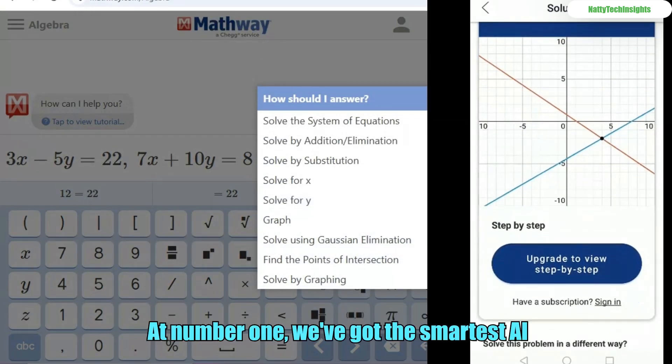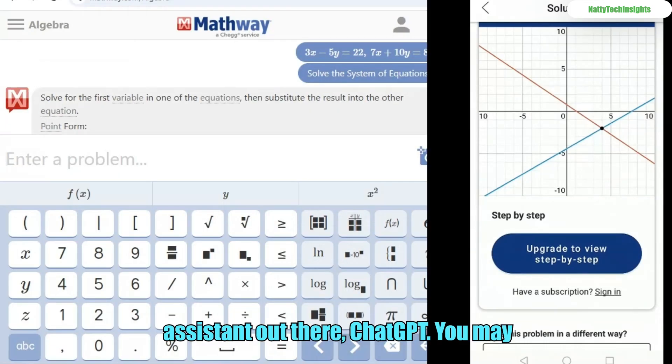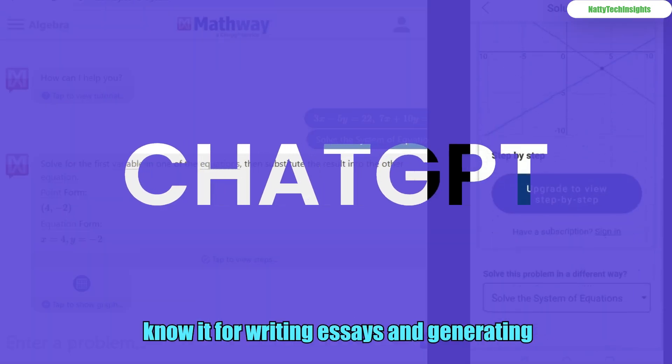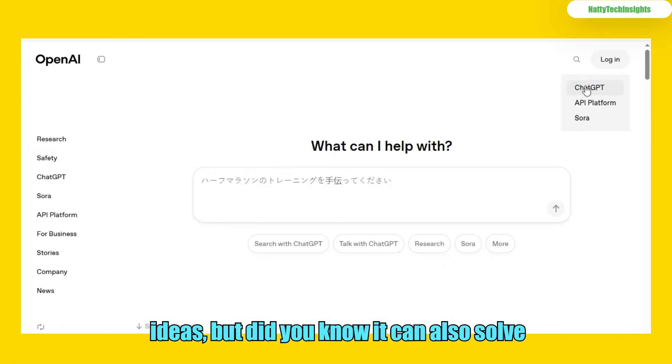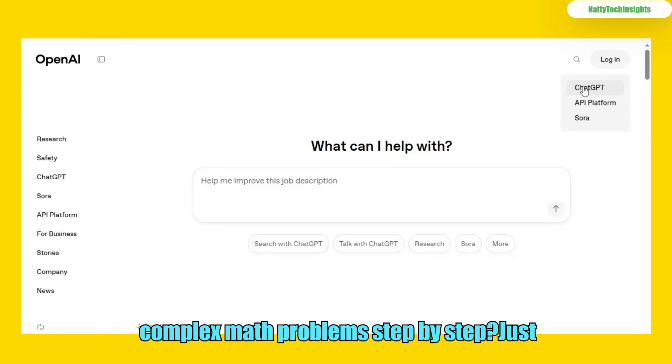At number 1, we've got the smartest AI assistant out there, ChatGPT. You may know it for writing essays and generating ideas. But did you know it can also solve complex math problems step-by-step?